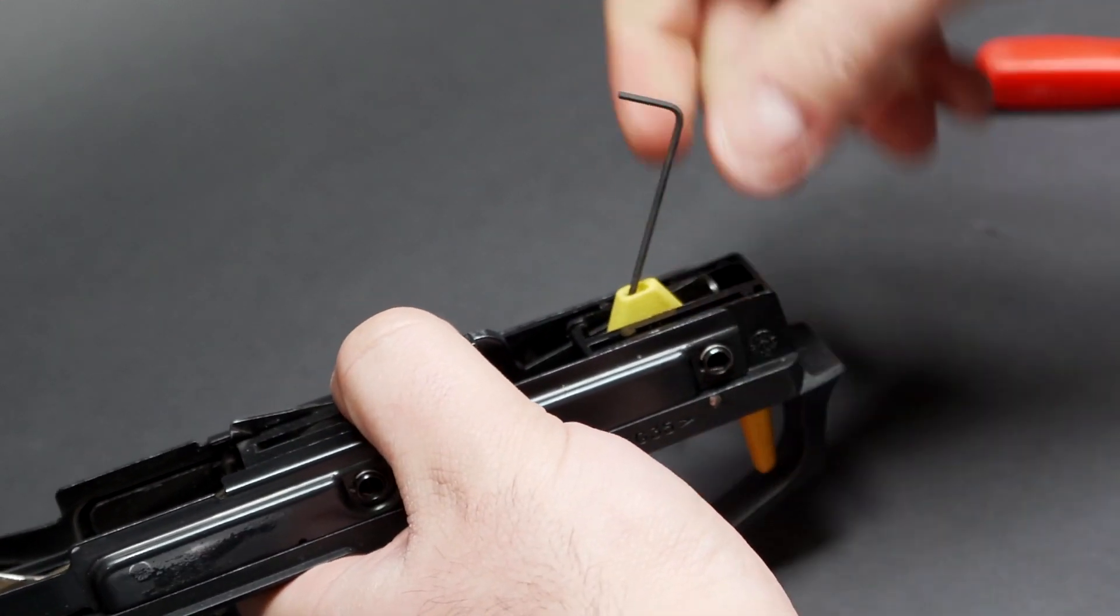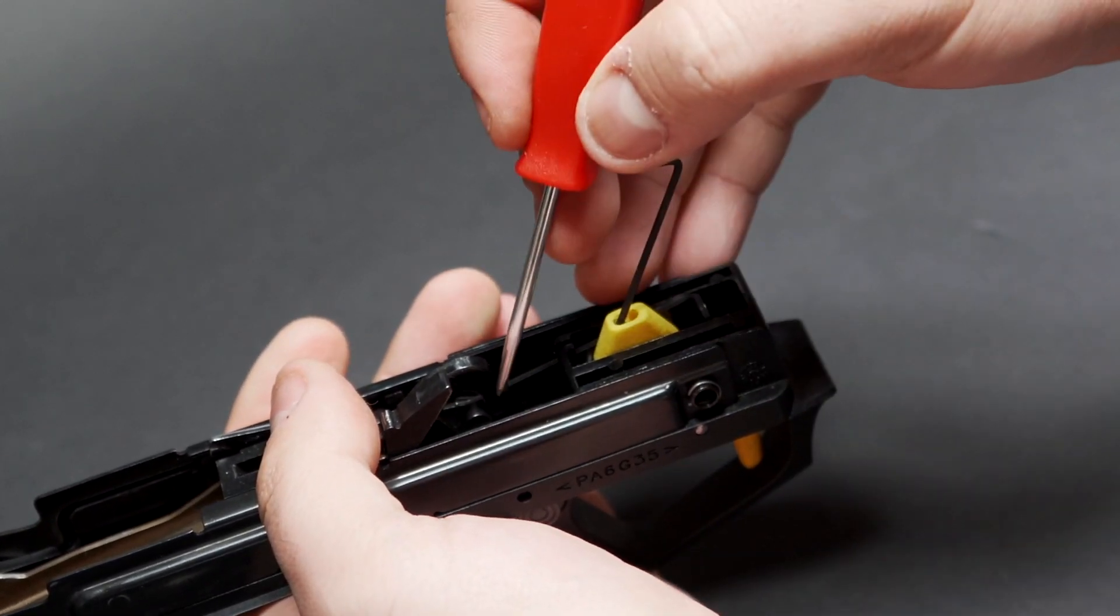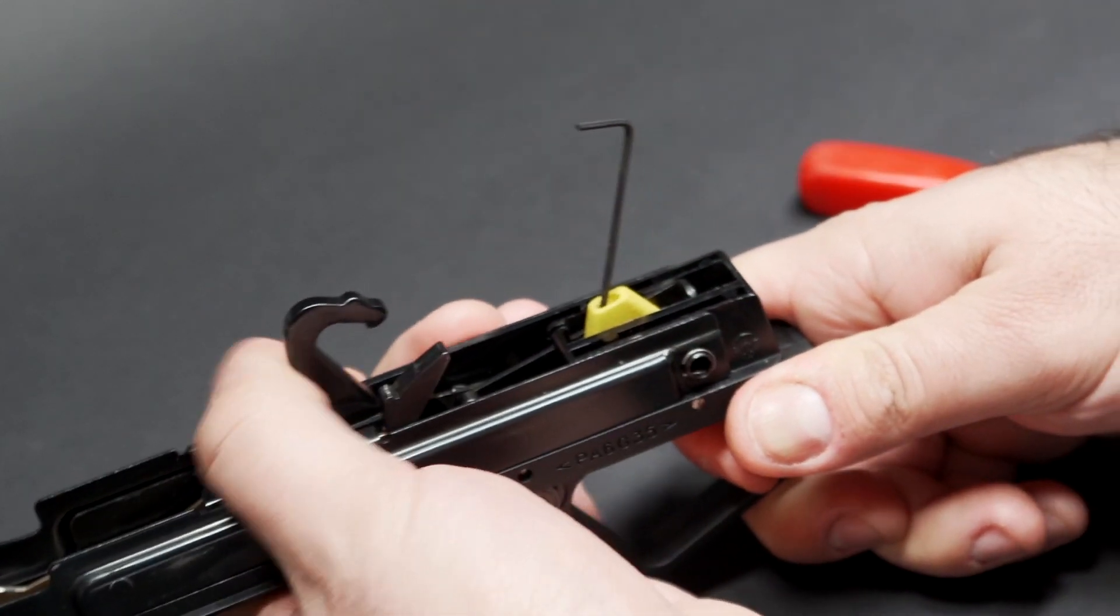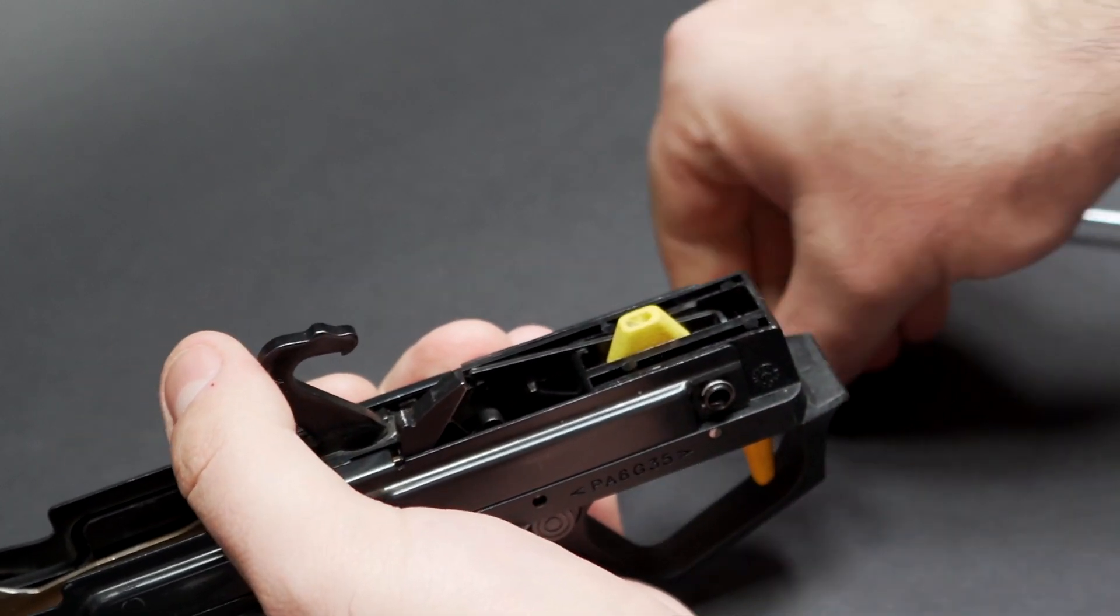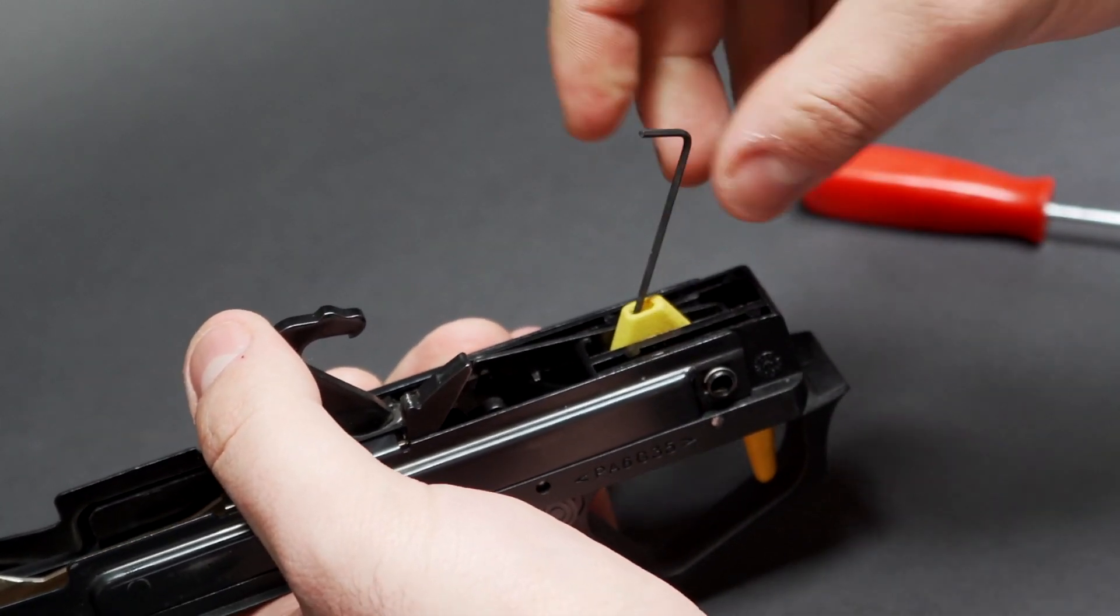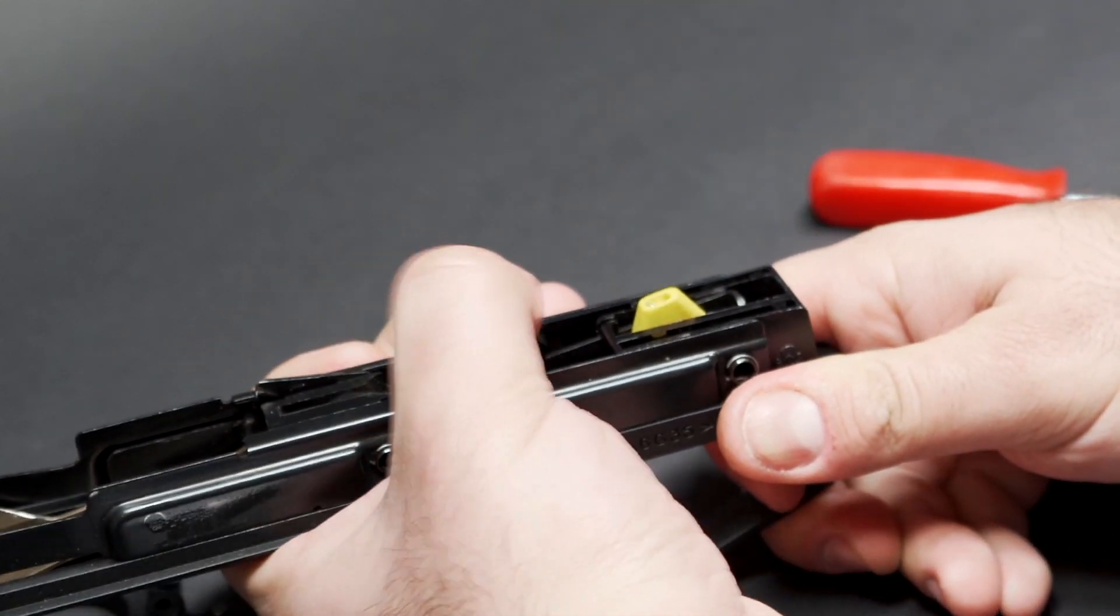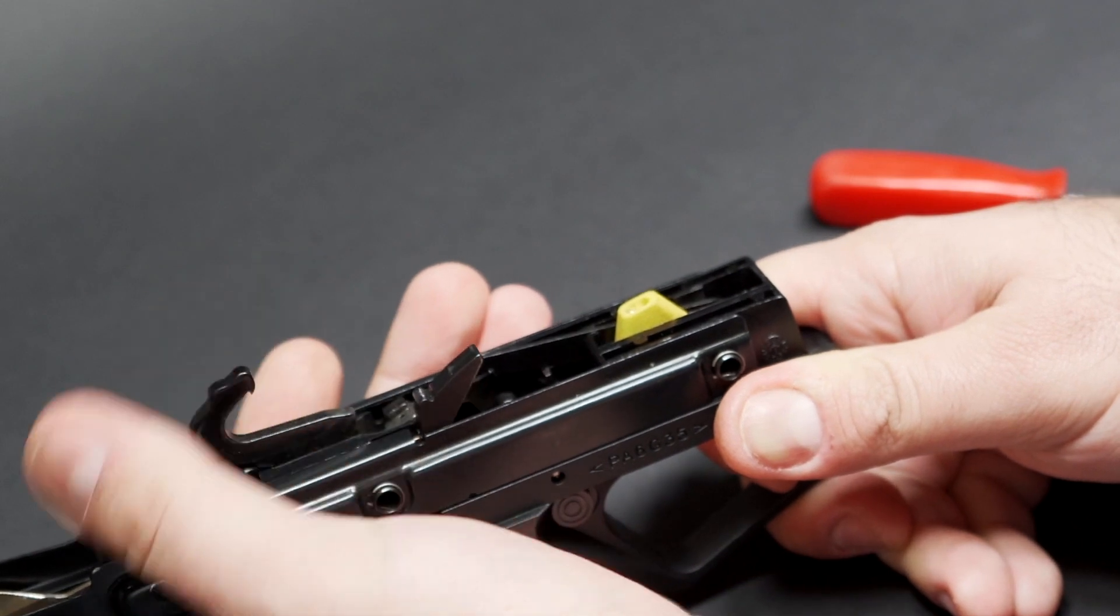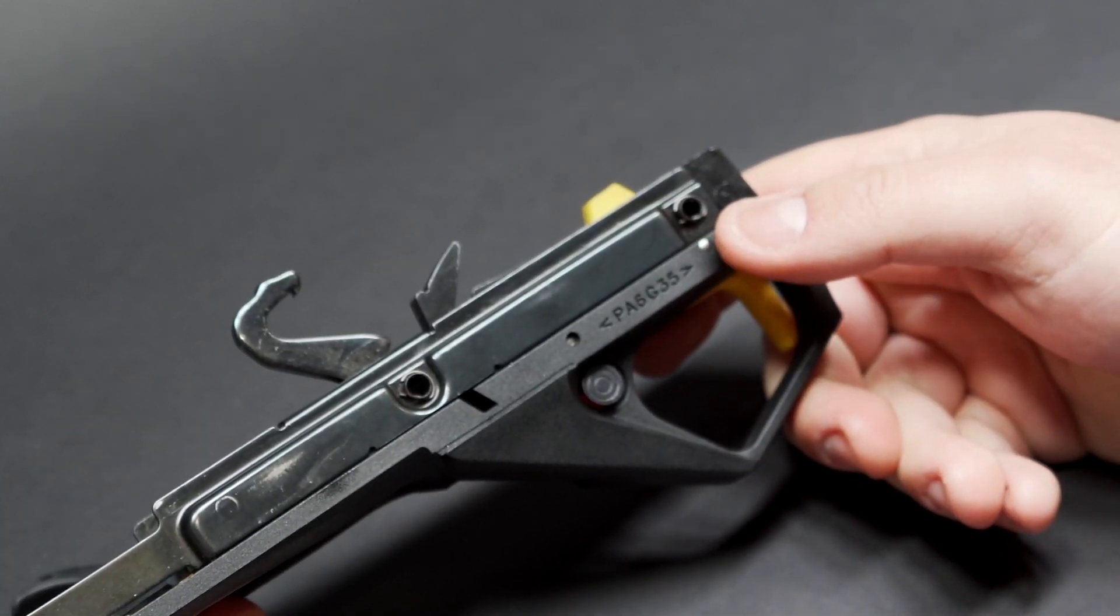From here, just take your hex key and unscrew it bit by bit until you can drop the hammer. You should be able to watch the relationship between the disconnector and the hammer, and you should be able to tell when it's about to let go. Once you just get to that point there, unscrew it another half to a full turn. Your over travel is now set. That is the trigger now completely set up and you're ready to go. Put that back in your gun and go have some fun.